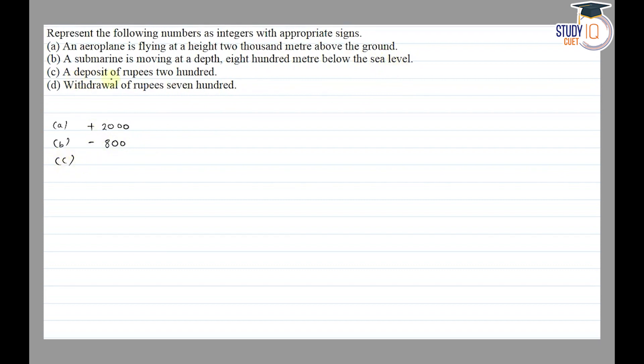Part (c): A deposit of rupees 200. Deposit means we are adding, so for deposit we use positive sign, and rupees given is 200, so +200.